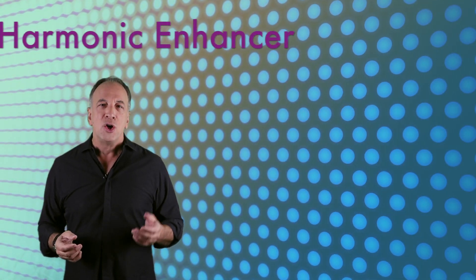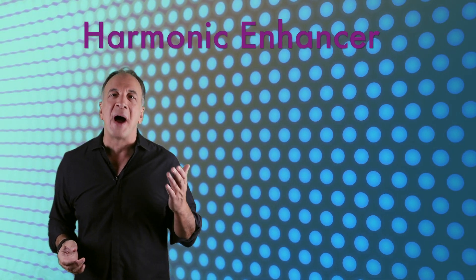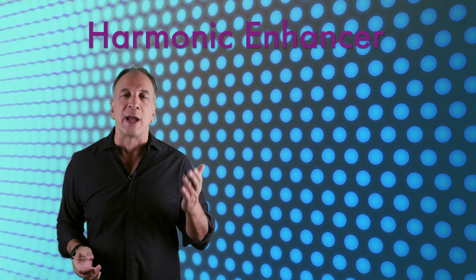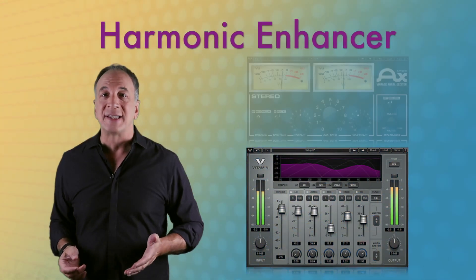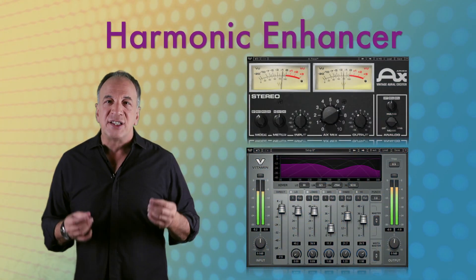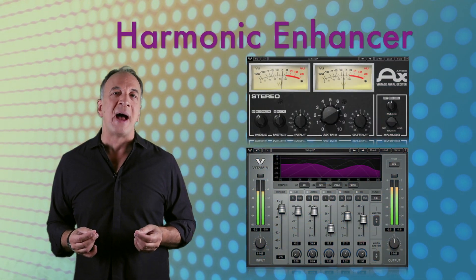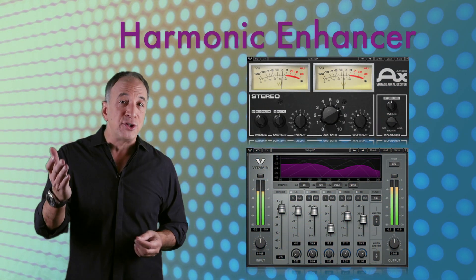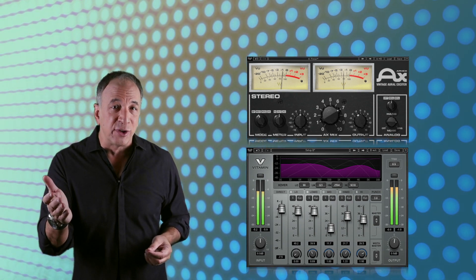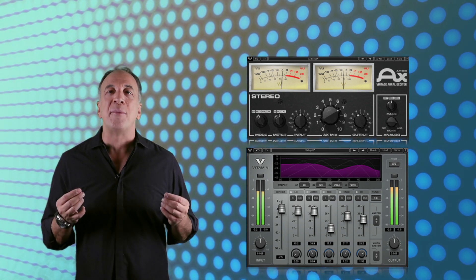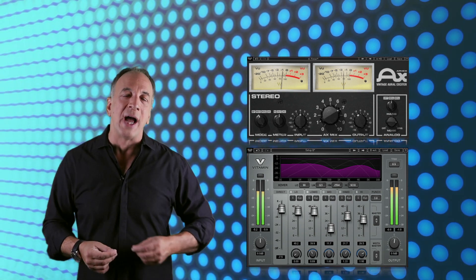So if you want to open up the top end of an instrument in a more natural or musical way, try using a harmonic enhancer like Waves Vitamin or the Aural Exciter. It synthesizes higher frequency harmonics, and now that you know what harmonics really are, you'll have a better understanding of how and why to use it.